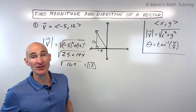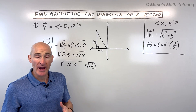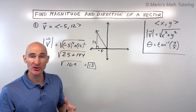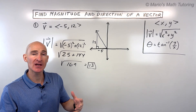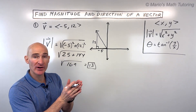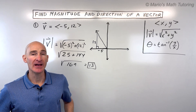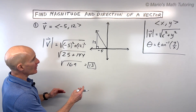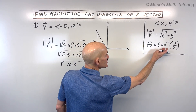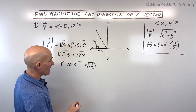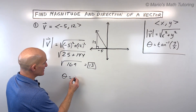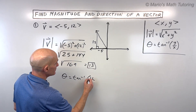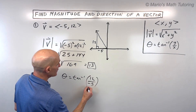That represents the magnitude. Now let's take a look at the direction of the vector. A vector is made up of two components: a magnitude, which is like how strong a force is, as well as the direction, like where that force is being directed. It's different from a scalar, which is just a number. When we find the angle, we can use this formula: theta equals tangent inverse of y divided by x. That's tangent inverse of the y component 12 divided by the x component negative 5.